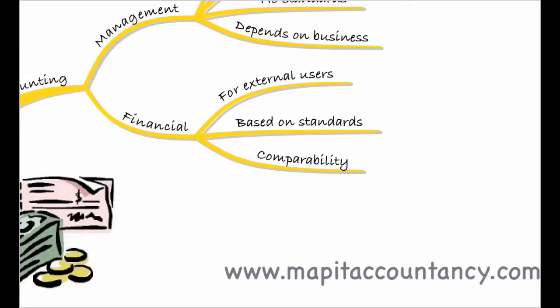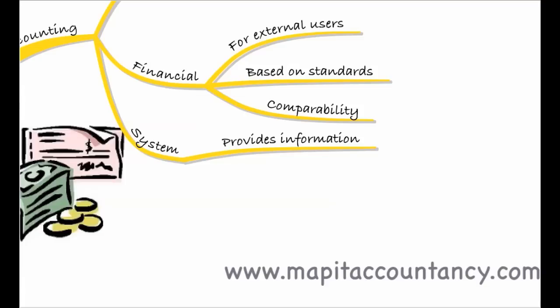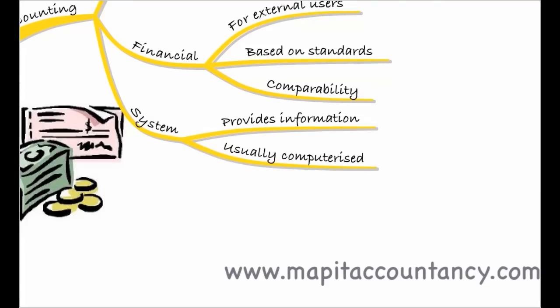That's the big difference between management and financial information. Management accountancy looks within the business with no standards — just whatever they need to run it. Financial accountancy is for external users, based on standards, and all about comparability. We need a system to provide this information within the business — usually computerised — producing management accounting information and compatible financial accounting information for those users. This course will concentrate on the financial information provided, the standards, and the accounts produced for external users. Management accountancy will be covered in a different module.